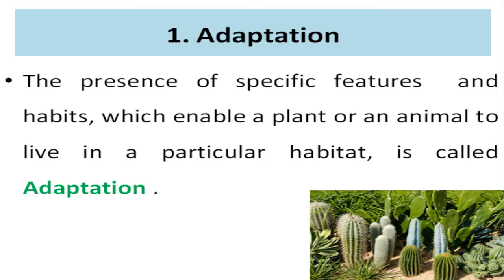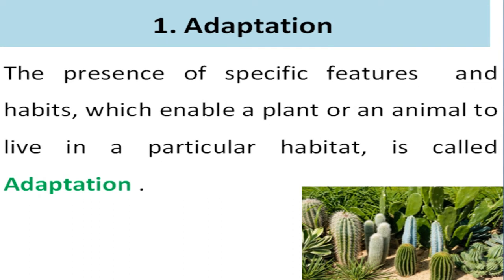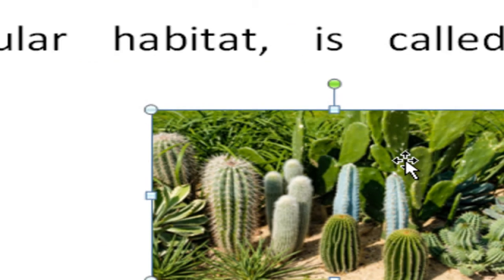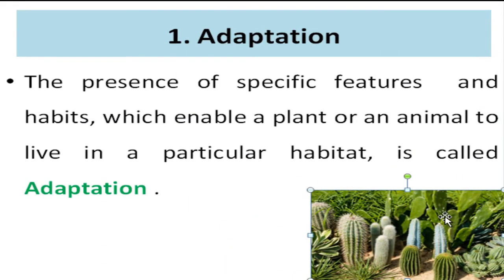Our first keyword is adaptation. The presence of specific features and habits which enable a plant or an animal to live in a particular habitat is called adaptation. For example, cactus are adapted to survive in the desert because they have specific features in their body that enable them to survive in that particular habitat.